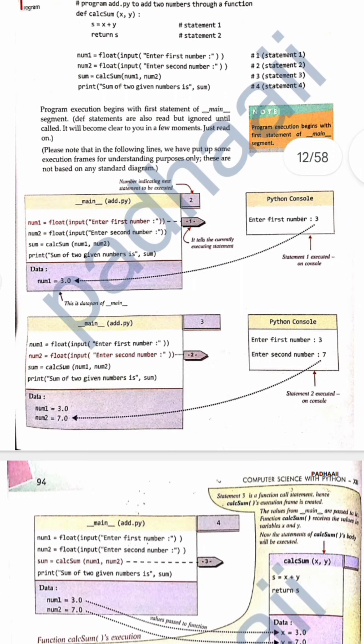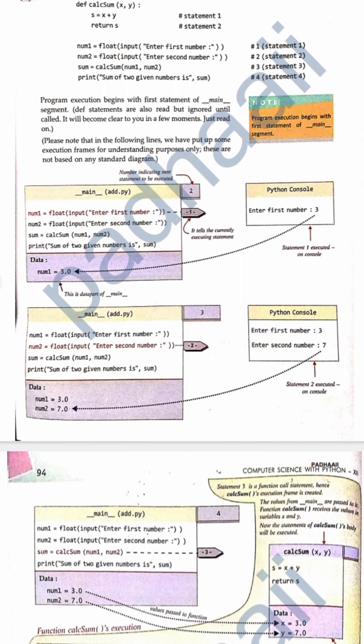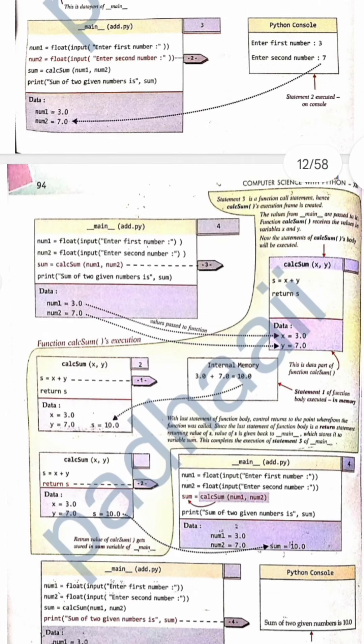When we see how it is occurring, the first line that gets executed is: num1 is equal to float input 'enter first number'. Then it goes to the second statement — 'enter the second number'. Say the first number entered is 3 and the second number entered is 7. Then it will go into the third statement, which calls the function.